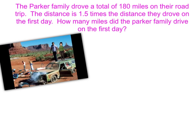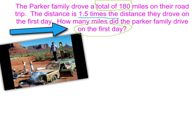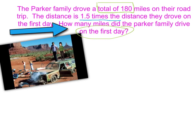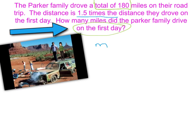Here's the second example. The Parker family drove a total of 180 miles on their road trip. This distance is 1.5 times the distance they drove on the first day. How many miles did the Parker family drive on the first day? First thing — define the variable. The question asks how many miles on the first day, so let's say our variable is m, where m equals miles on the first day.